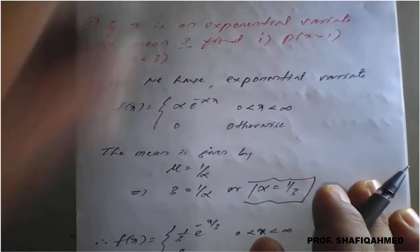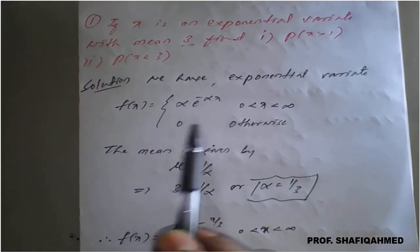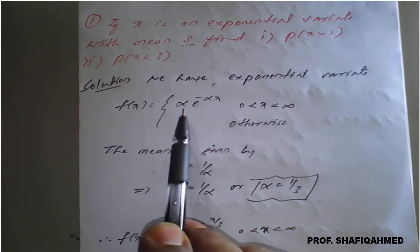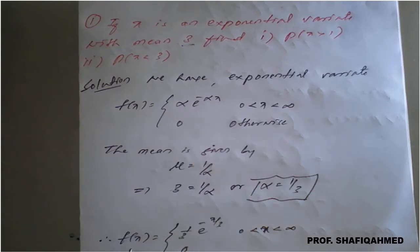Once we got the alpha value, our given function f(x) will be replaced with this alpha value as 1 by 3, which is f(x) equals 1 by 3 times e raised to minus x upon 3, where x is lying between 0 and infinity.